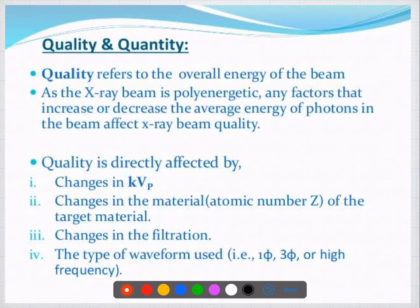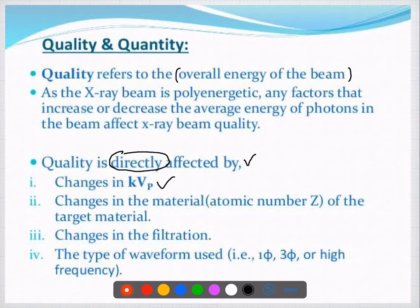Coming to quality: quality is a term that refers to the overall energy of the beam. As the x-ray beam is polychromatic, any factor that increases or decreases the average energy of all the photons will affect beam quality. Factors affecting quality are change in KVP, change in target material based on atomic number, change in filters, and type of waveform. For question number five, the answer is all of the above.